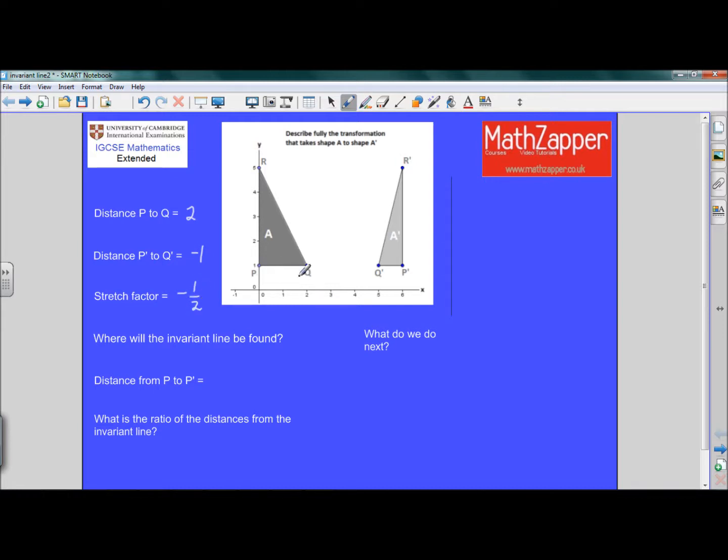The distance PQ is twice as big as P dash Q dash, therefore P dash Q dash is half as big as PQ. So it's a stretch factor of minus a half.